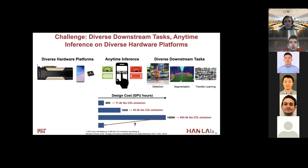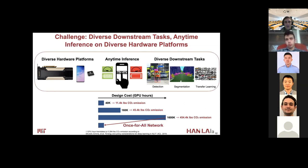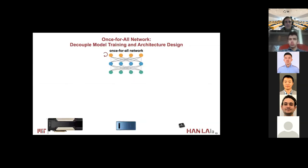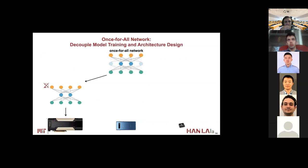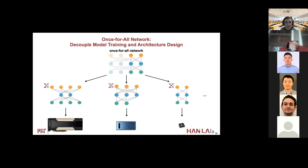All of these problems require reducing this linearly growing design cost. In this work, we introduce the Once-for-All network to efficiently search for specialized models. The key idea is to decouple model training from architecture search. In the model training stage, we train a single Once-for-All network that supports all architectural configurations in the design space. In the deployment stage, we can directly get a specialized subnetwork that fits the given hardware without retraining, and this process can be repeated many times to specialize neural networks for different hardware platforms without retraining.